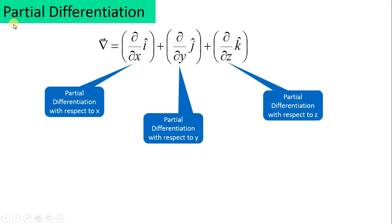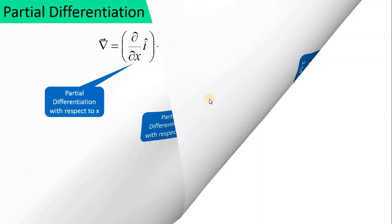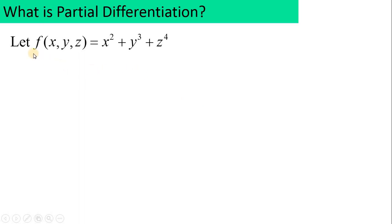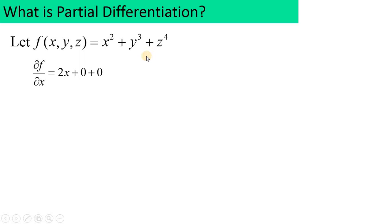What is partial differentiation and how do we do it? Suppose there is a multivariable function F that depends not only on X but also on Y and Z. The problem with a multivariable function is: how do you differentiate it with respect to X alone? We cannot simply find dF/dX because other variables Y and Z are also present. So instead, we use partial differentiation — del F / del X.